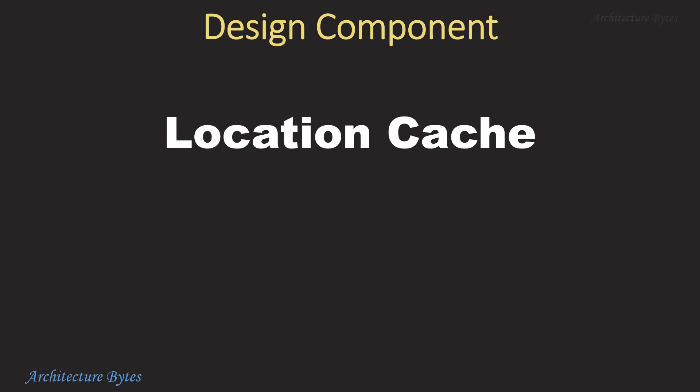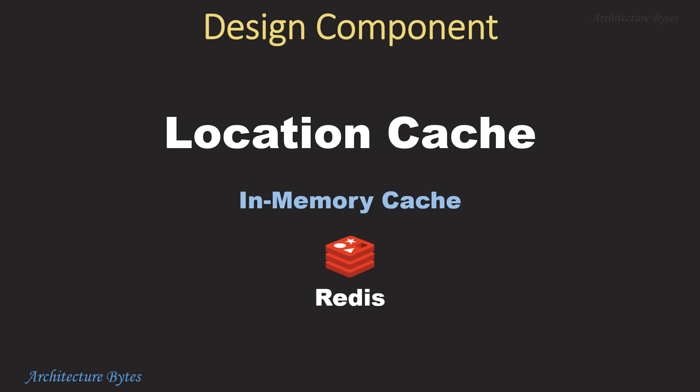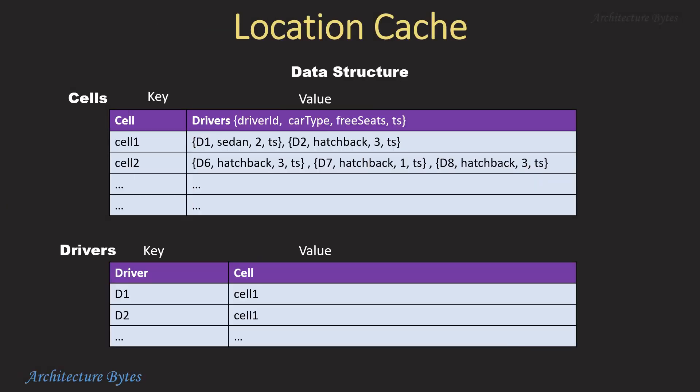Geohash or S2 is just a library — we still need to store the location information somewhere. Essentially, we store a list of cells and drivers in them in real-time. An in-memory cache is ideal for this, for fast storage and retrieval — for example, a Redis cache, which stores data in key-value pairs. We could have cell ID as the key and a list of drivers along with car type and free seats as the value. Additionally, we could store driver ID as a key with cell ID as the value. Having both cell ID and driver as separate keys allows us to look up information by either one.